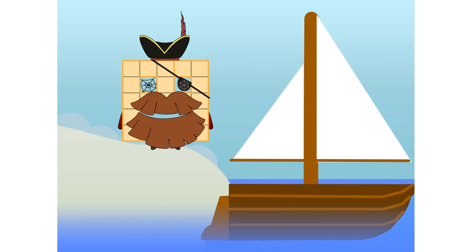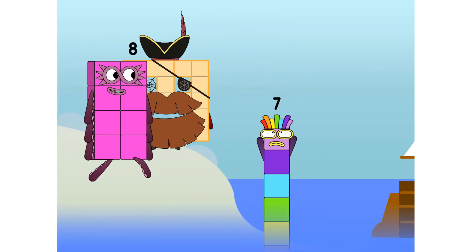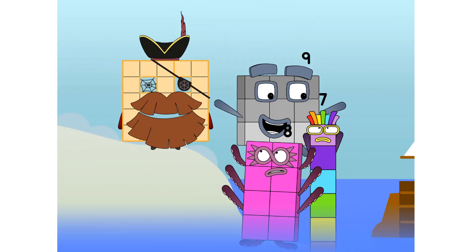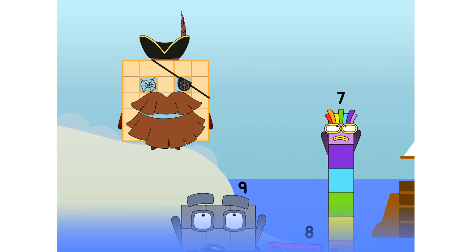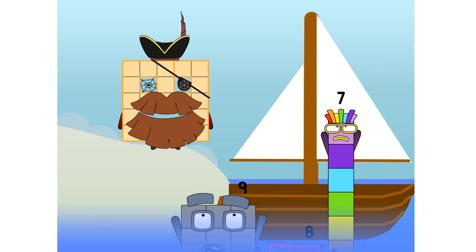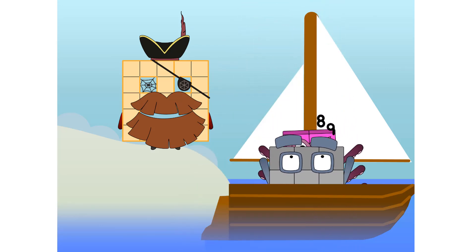All right, me hearties. Into the boat you go. I have room for 20 numbers. Number 1, 2, move along, lads. 3, 4, 5, 6, 7, step lively, 8. Smartly now. Move along, 9. Blow me down. Number's overboard. Hang on, lads. It's a good thing you know how to swim. Let's go, let's go, me hearties. 10.